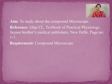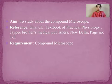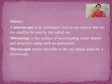The reference is basically a reference of a book or a website from where you took the matter. In this particular practical, the requirement is just a compound microscope — so we will write requirement as compound microscope. Coming to the theory: a microscope is an instrument which is used to see objects which are too small and cannot be seen through the naked eye.